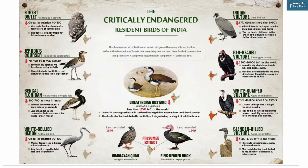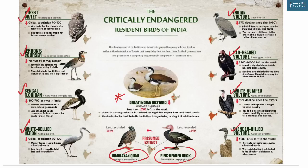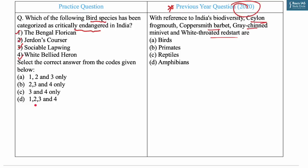Looking at the IUCN Red List, critically endangered birds include: Forest Owlet, Jerdon's Courser, Bengal Florican, White-bellied Heron, Great Indian Bustard, Indian Vulture, Red-headed Vulture, White-rumped Vulture, and Slender-billed Vulture. Himalayan Quail and Pink-headed Duck are extinct from India. Based on this, all four mentioned species — Bengal Florican, Jerdon's Courser, Sociable Lapwing, and White-bellied Heron — are critically endangered. The answer for the PYQ is A: all these names belong to birds.